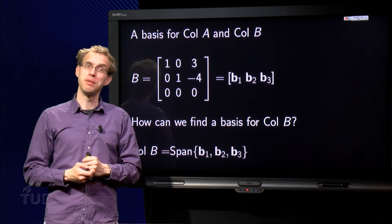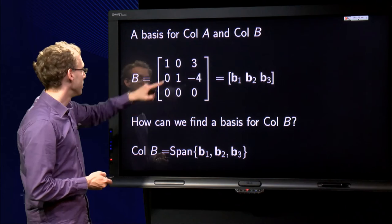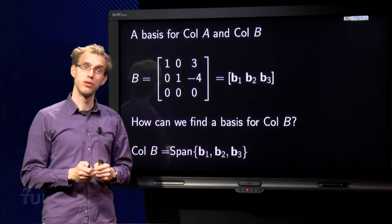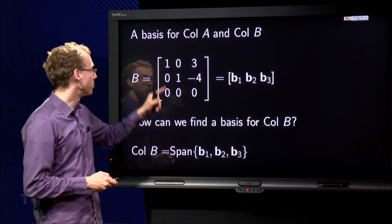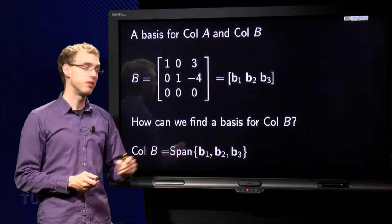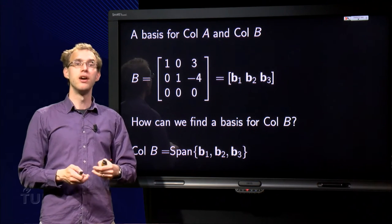We will have a matrix A and a matrix B in this video. We will start with B. B is the matrix over here, consisting of three columns: b₁ is [1, 0, 0], b₂ is [0, 1, 0], and b₃ is [3, 4, 0]. And we want to find a basis for col B.